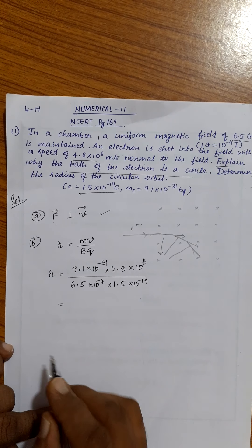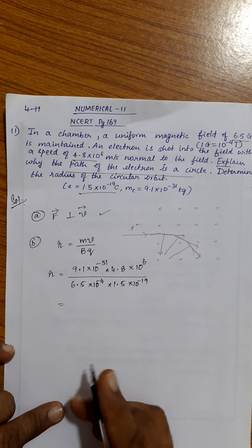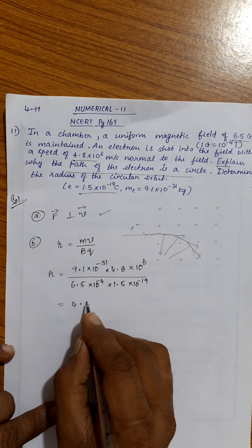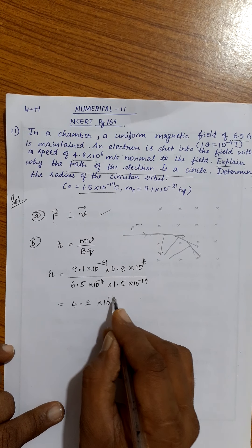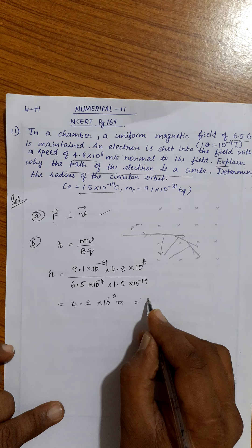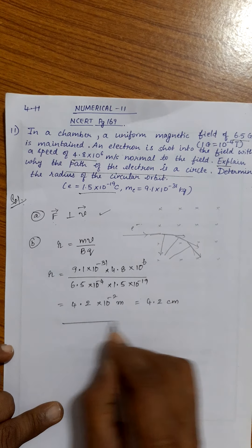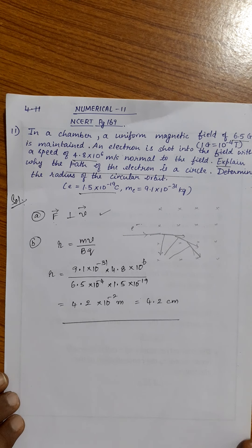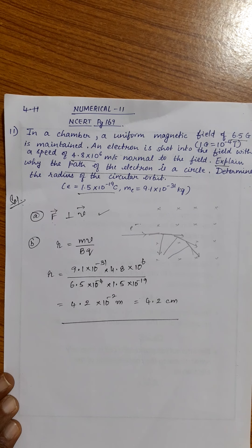If you simplify this, you will get the radius as 4.2 into 10 power minus 2 meter, which is equal to 4.2 centimeter. I hope it is understood children. Thank you very much.